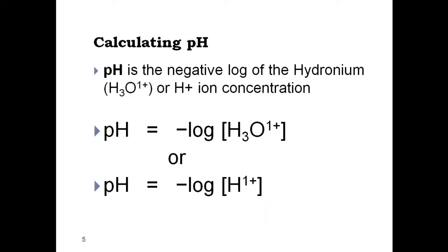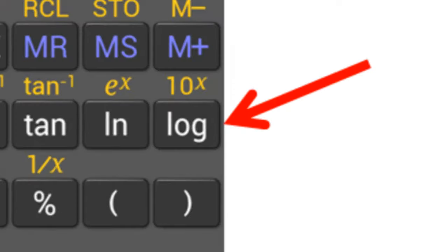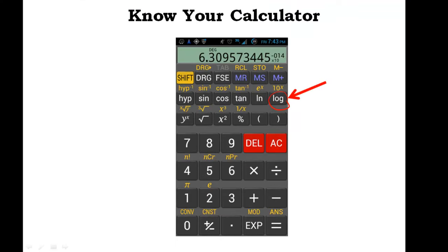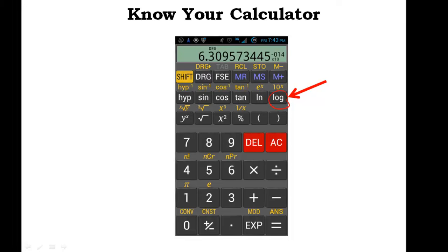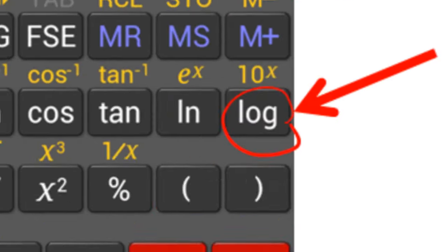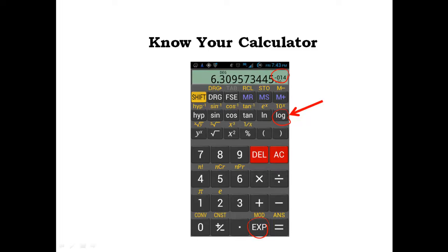The formula for pH is the negative log of the H+ ion concentration. We could also express it as the hydronium ion H3O+, and we're going to use these interchangeably — they mean the same thing. So we're looking at the negative log of that hydronium ion concentration. Know your calculator — the log button is huge for today. You'll also need the EXP button to enter numbers like 1×10⁻³.